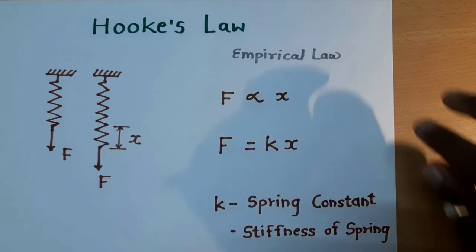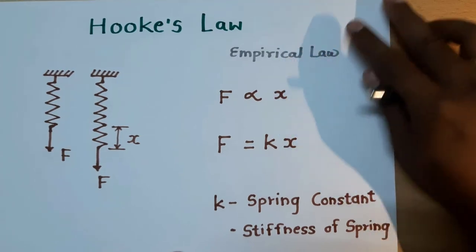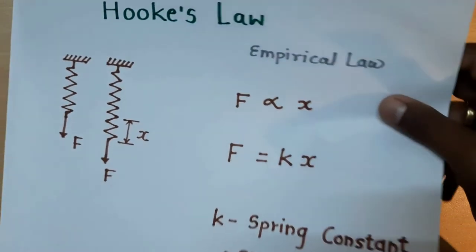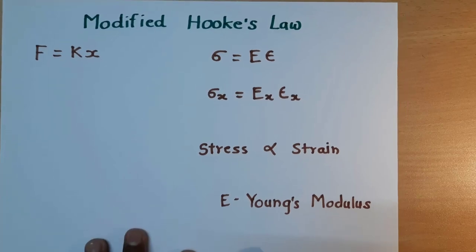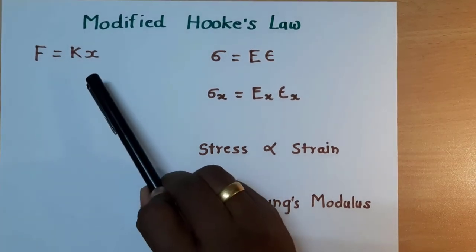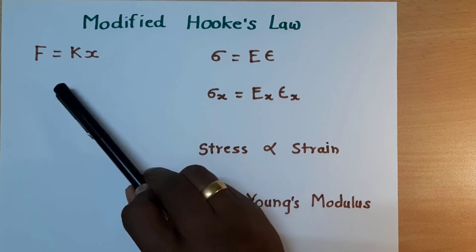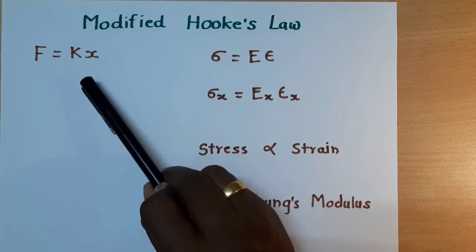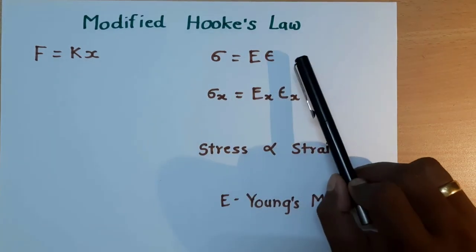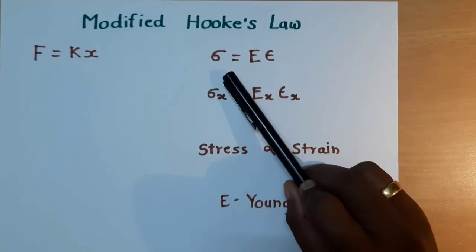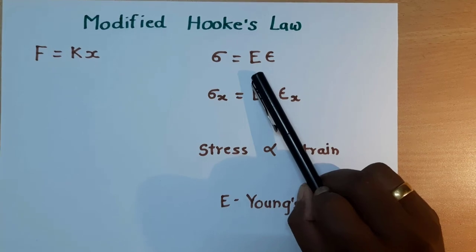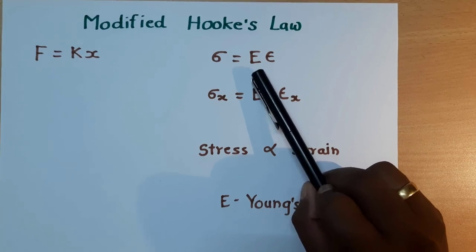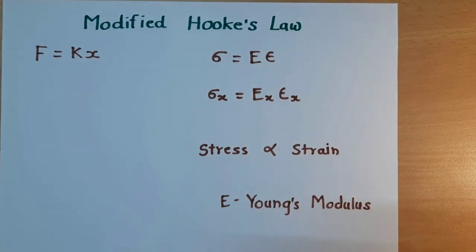So there is a modified version of this law. What is that modification? Here force is directly proportional to the deformation and we convert it into F is equal to KX. So what is the modified Hooke's law? Stress is directly proportional to the strain and there is a constant of proportionality that is called Young's modulus.